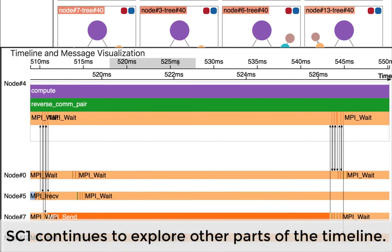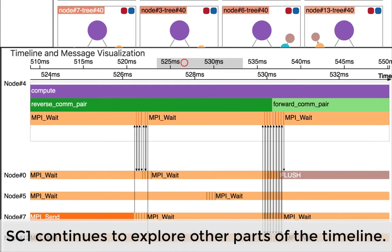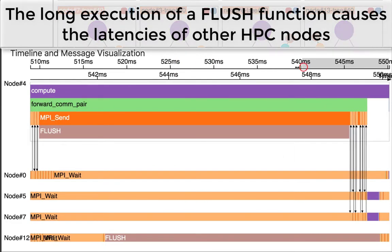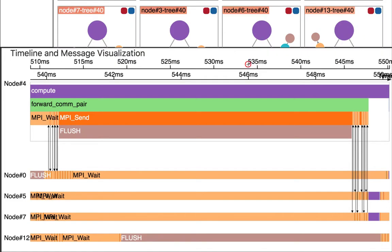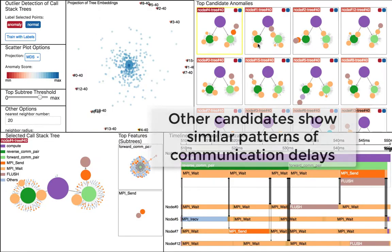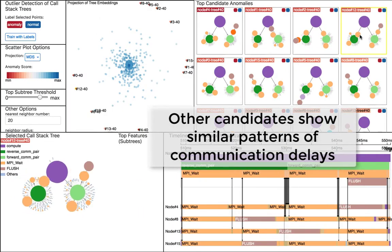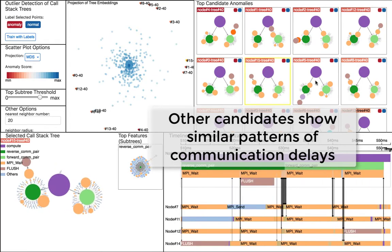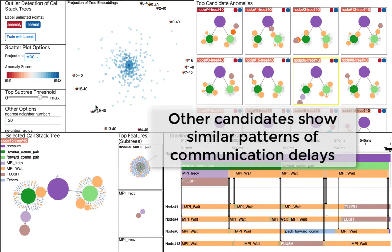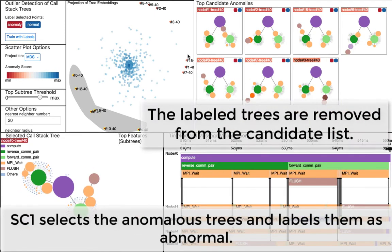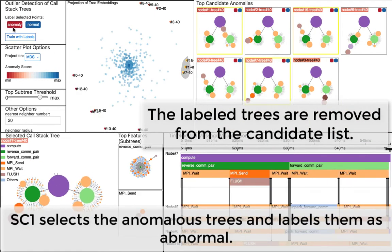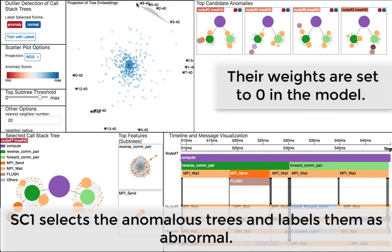During the exploration of the timeline, he also notices a long flush causes the latencies of other nodes. These patterns suggest the problems of the scheduling strategy of the HPC nodes. After examination of other candidate trees, SC1 finds that the same situation of communication delay also occurs in other nodes around the same time period. He labels those trees as abnormal and exports them for his scheduling strategy analysis.